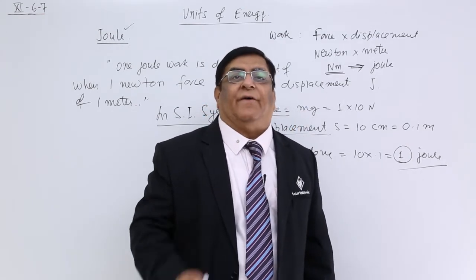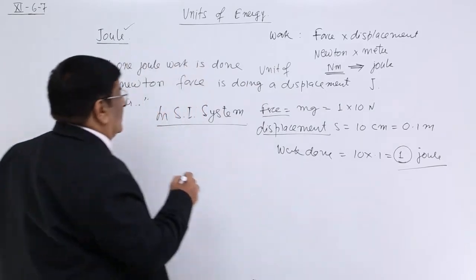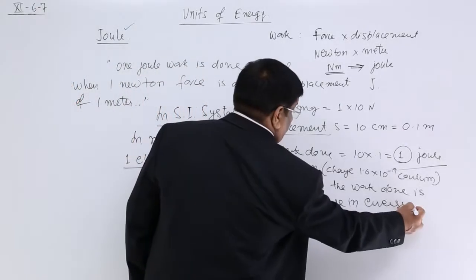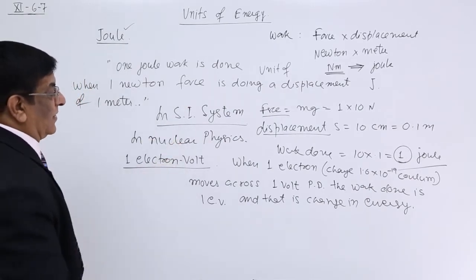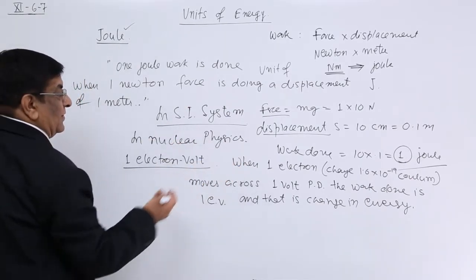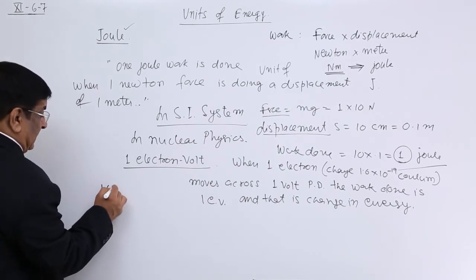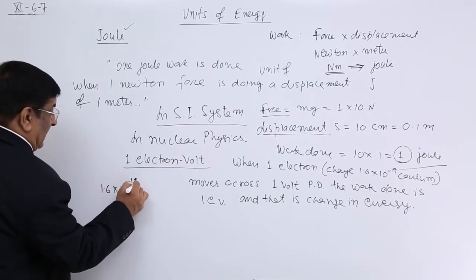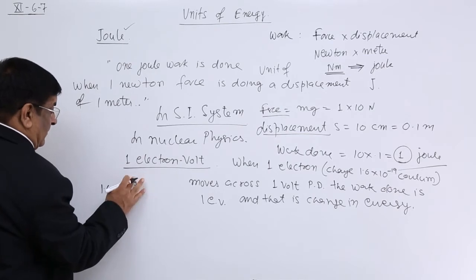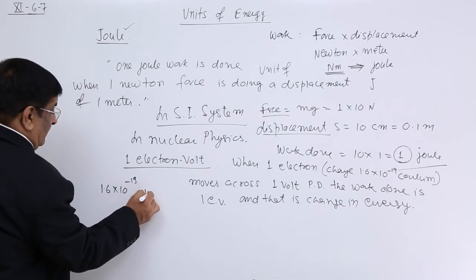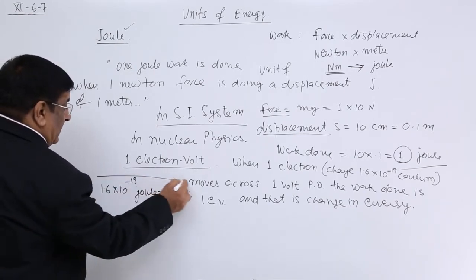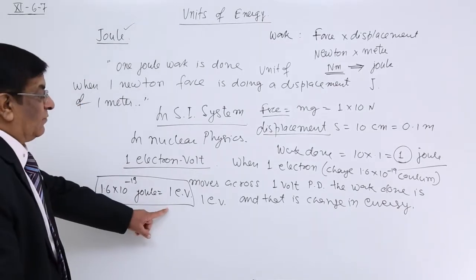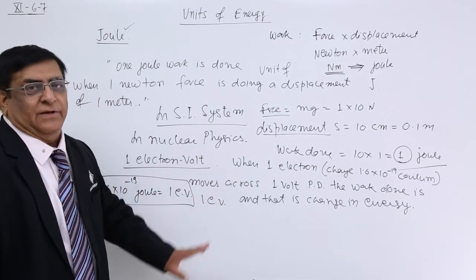The work done is having a different unit. We call it electron volt. There is change in energy. If we want to find out the relation between the two, then according to definition it is 1.6 × 10^-19 Joule is equal to 1 electron volt. Please remember this. This is what we use in nuclear physics.